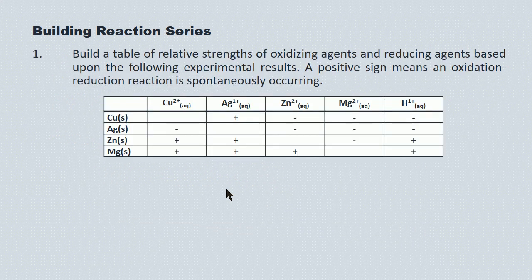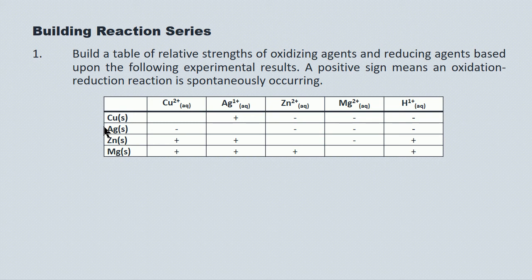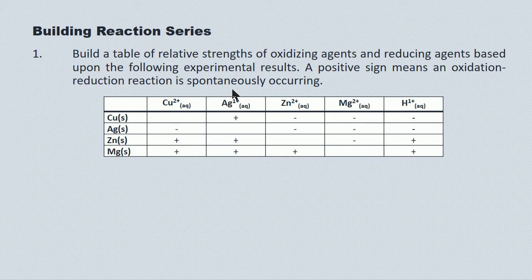Looking at the table, we have a positive result — a reaction takes place spontaneously between the silver ion and the copper atom. That means the silver ion is oxidizing the copper atom, turning it into copper 2+. In a competition for electrons, the silver ion wins — it's a stronger oxidizer than copper 2+. Likewise, the silver ion is oxidizing the zinc and the magnesium. So the silver ion is the strongest oxidizing agent among the metals.